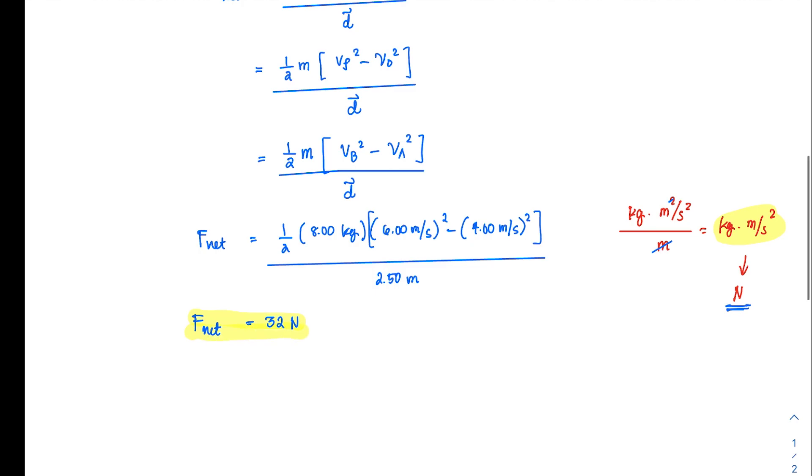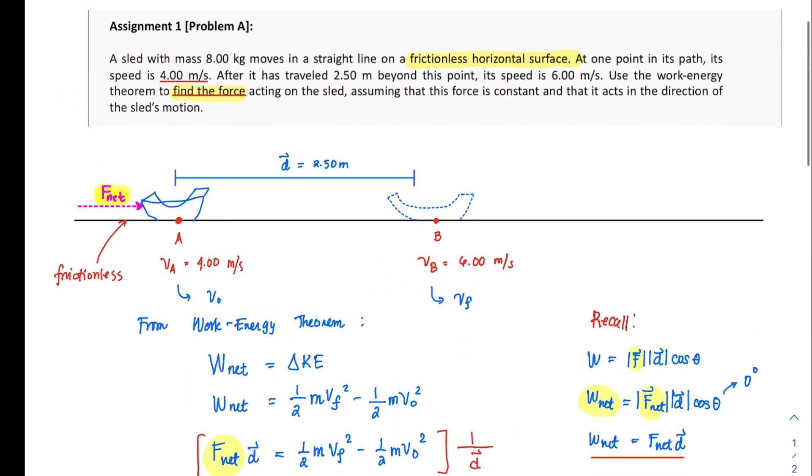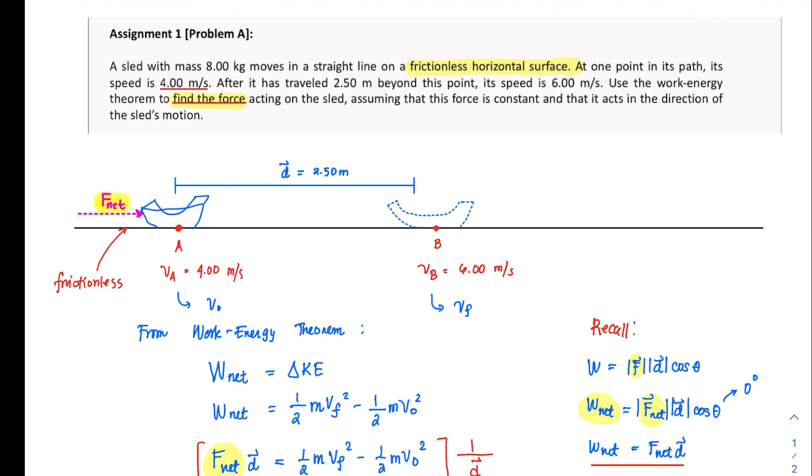So this is the F net for the force. If we go back to the problem, this must be the force that must be supplied to the sled in order for it to change its velocity from 4 meters to 6 meters per second when that force is applied over this displacement of 2.50 meters.